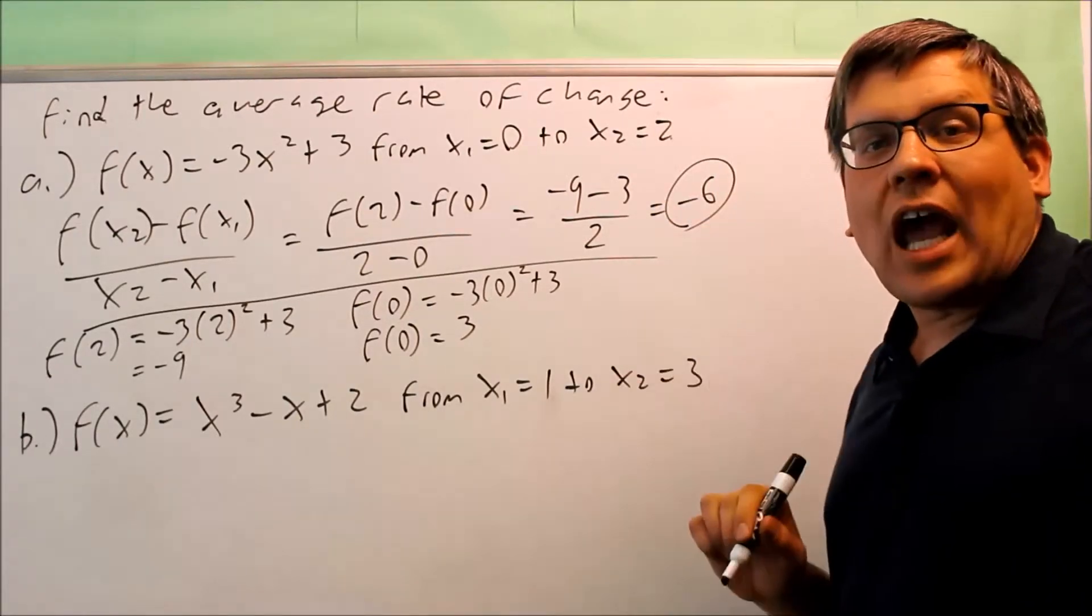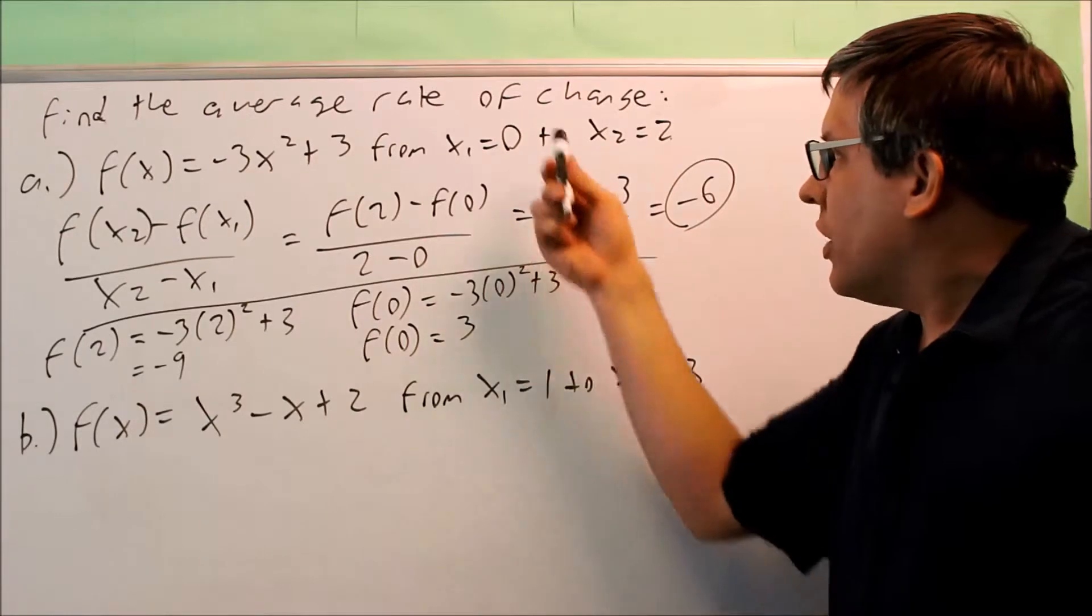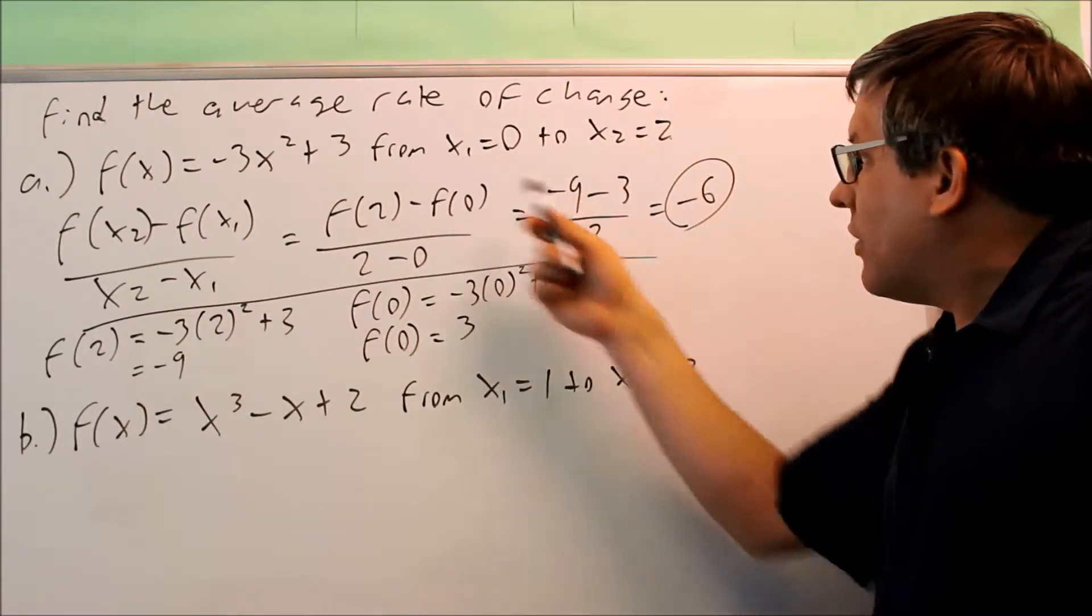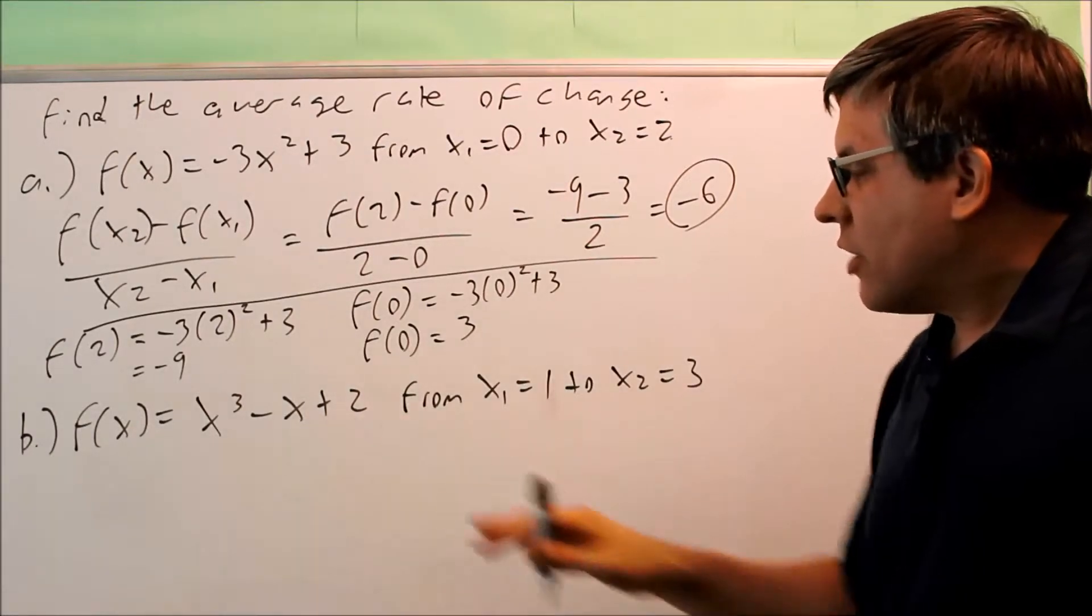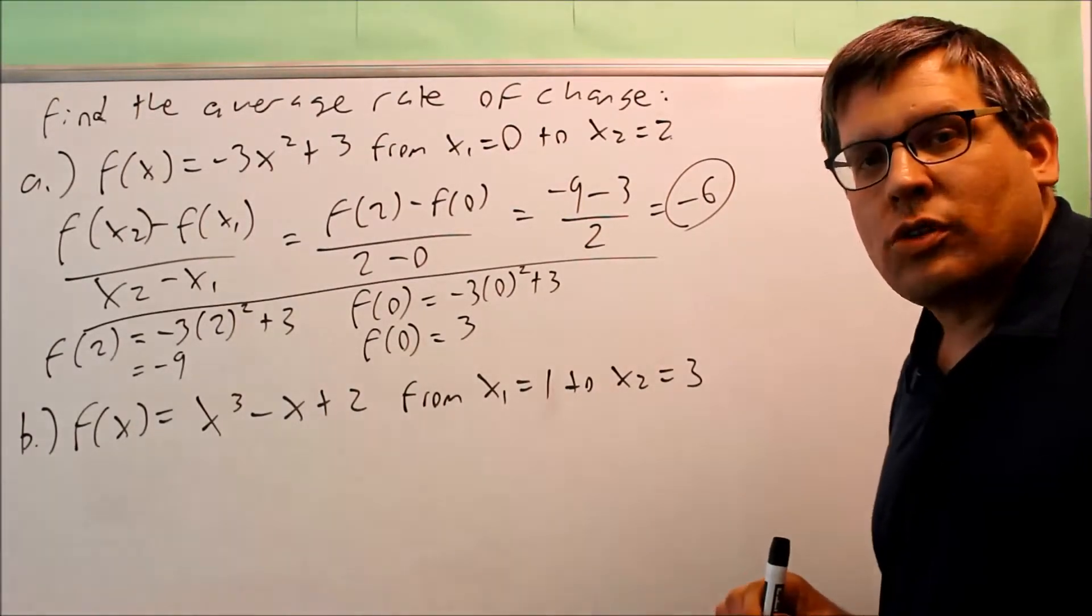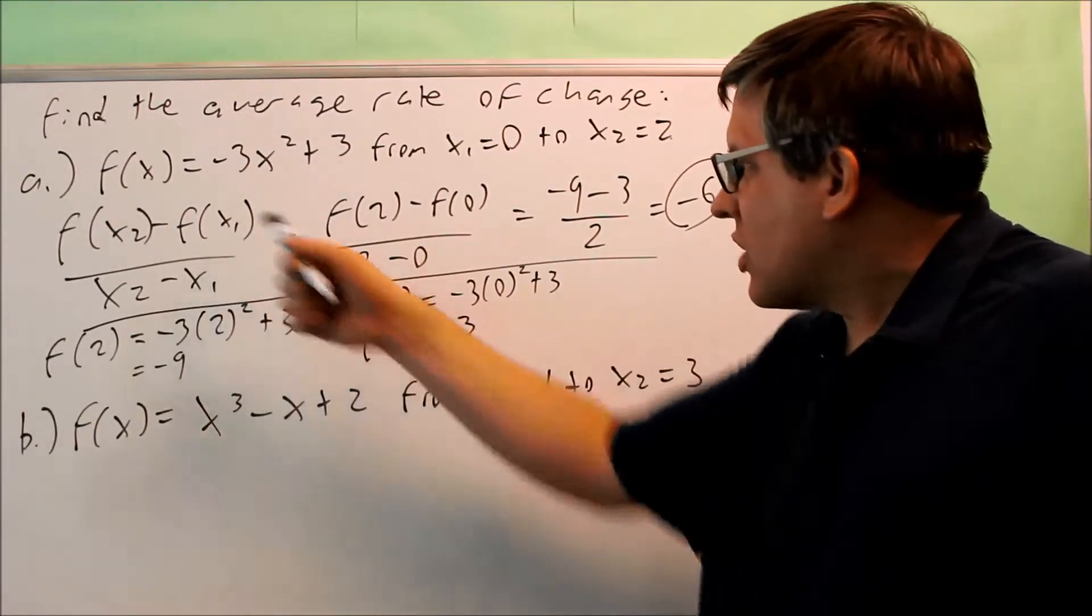So what does that mean? That means that the average slope between 0 and 2 on this curve is going to be negative 6. Next, let's do the same thing for this one down below. We're going to use the same formula.